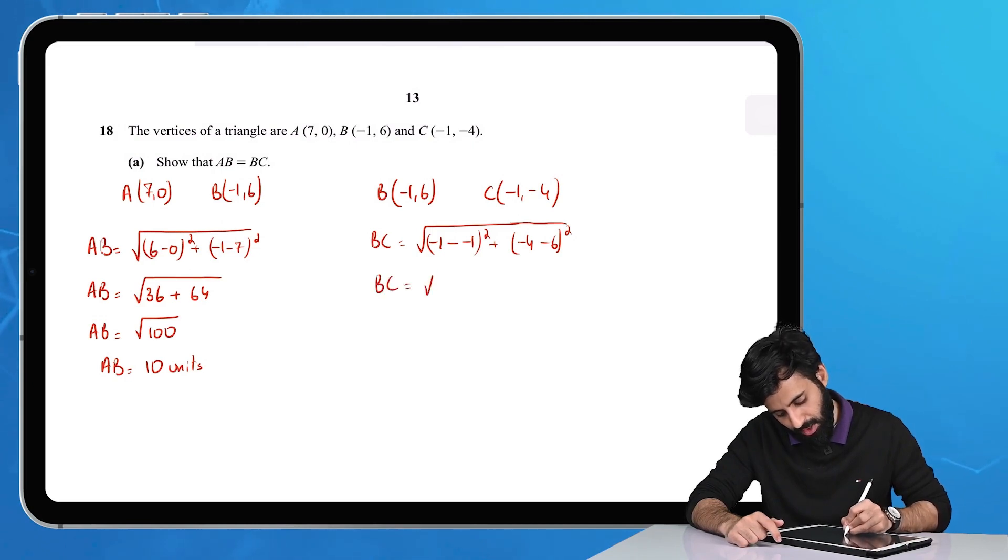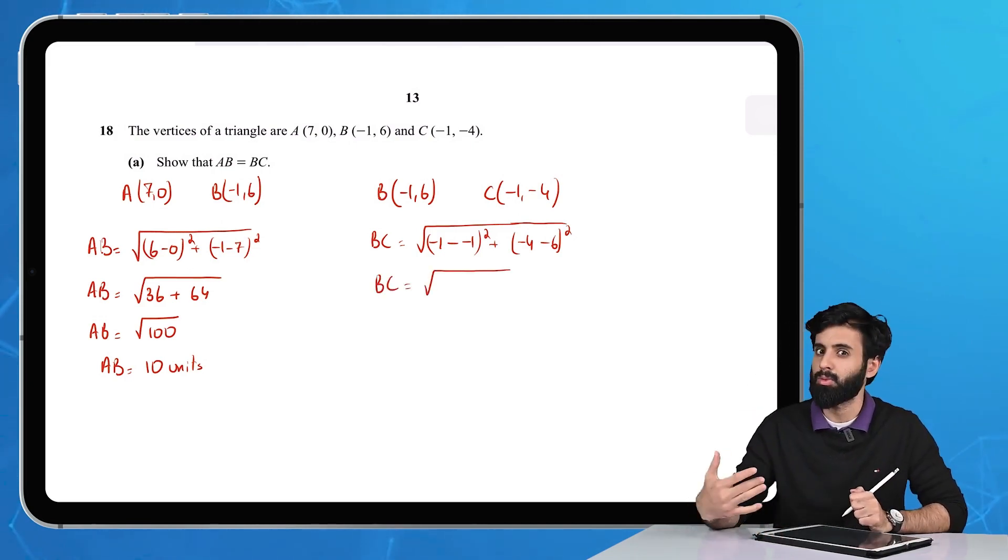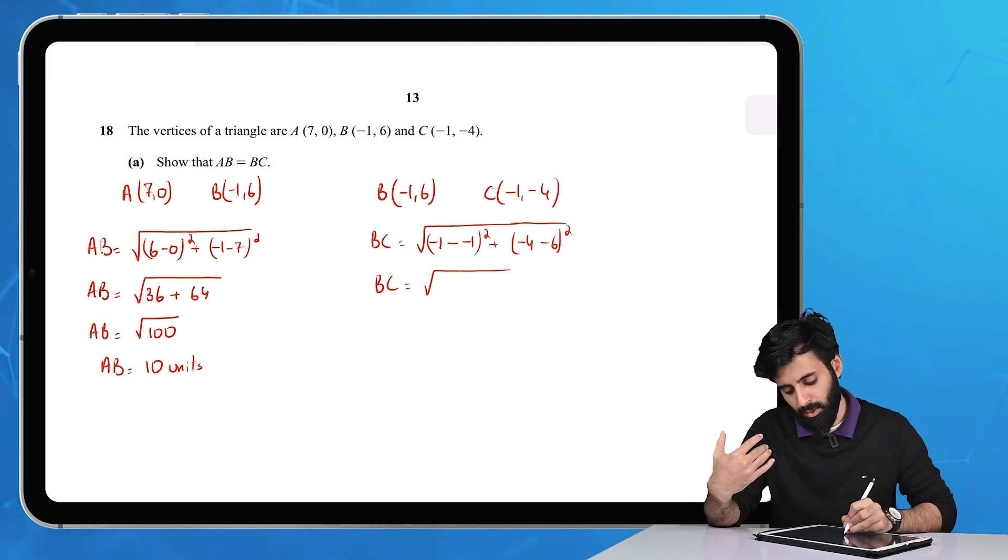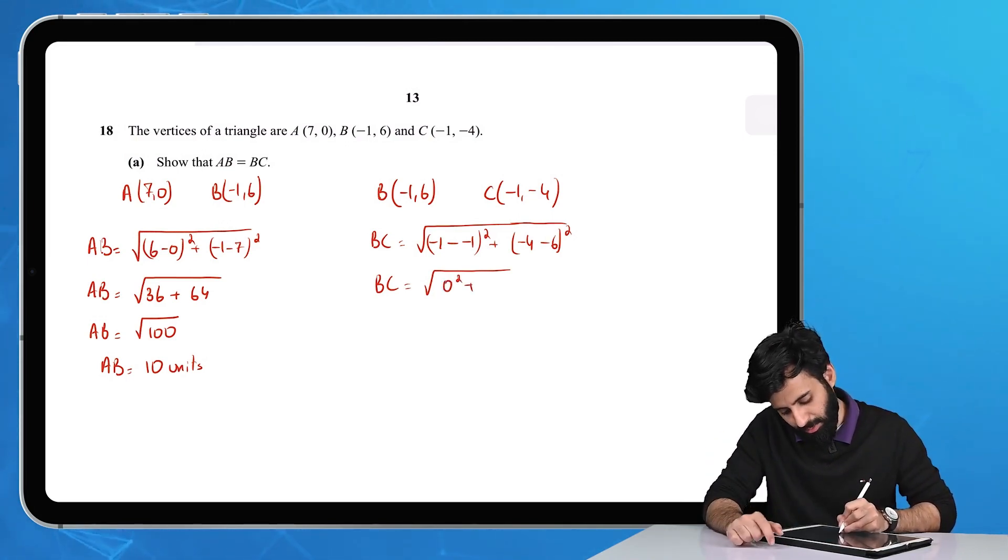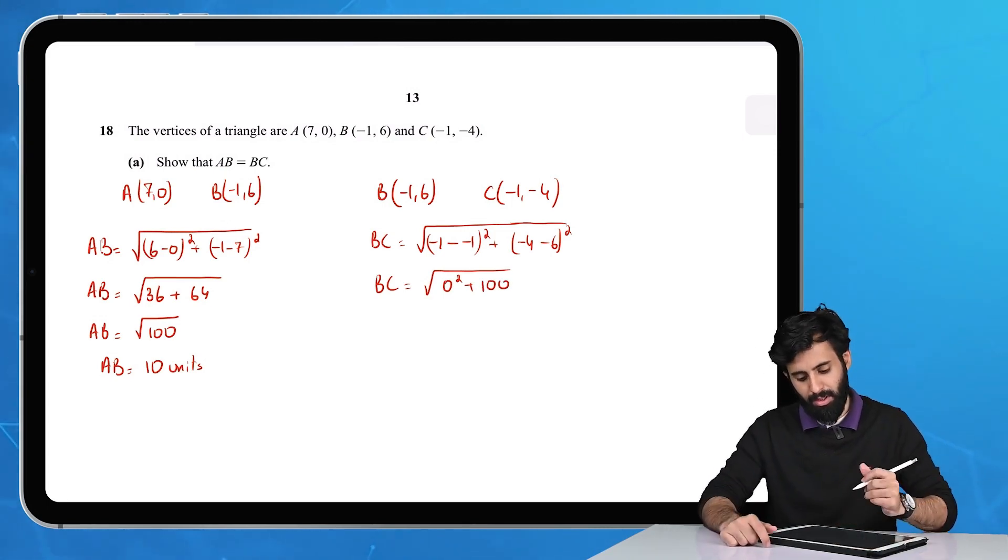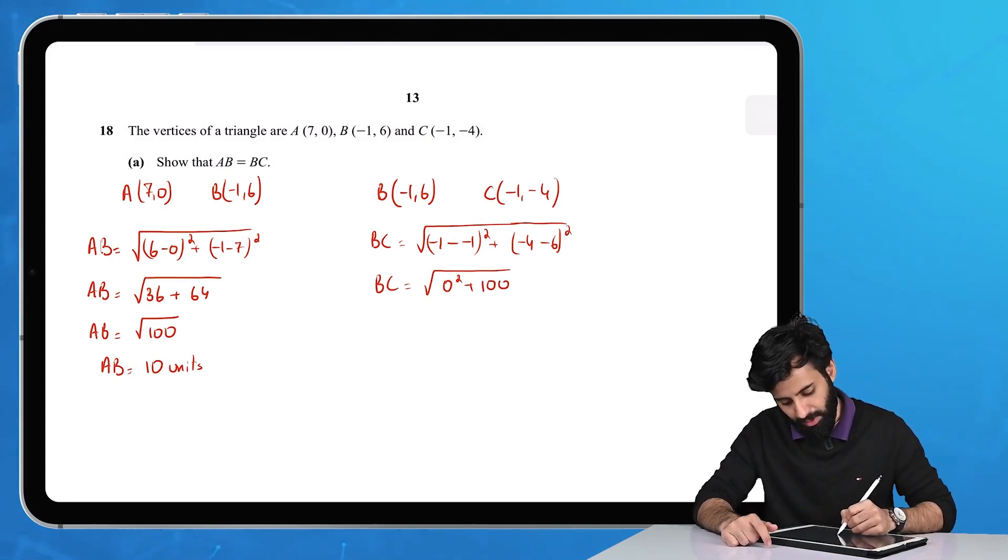Whenever you have a minus sign you've got to be extremely careful. So -1 minus -1 is -1 plus 1, which is 0 squared, which is 0. And -4 minus 6 is -10.